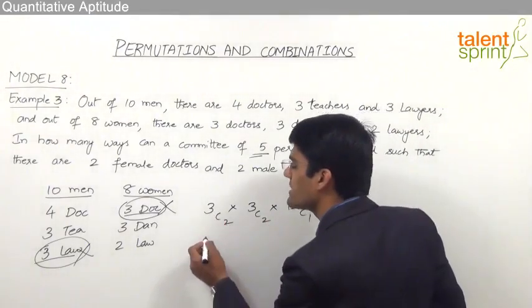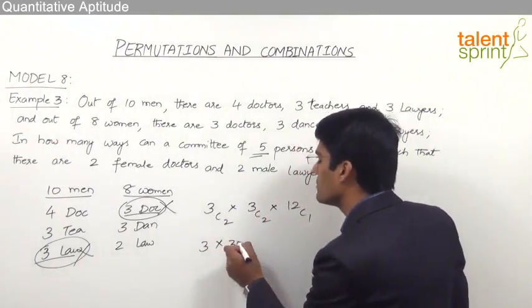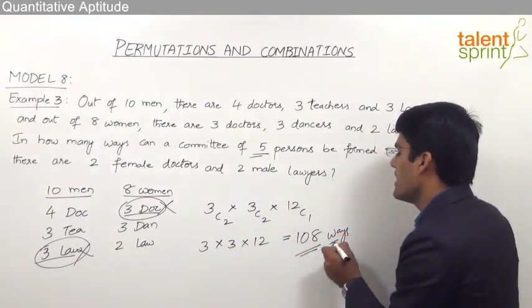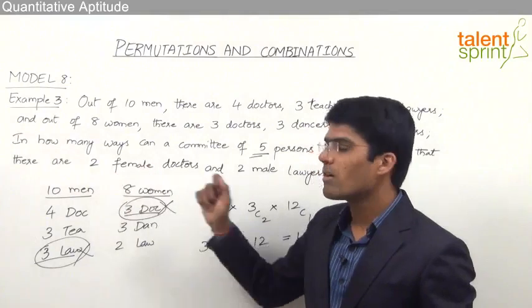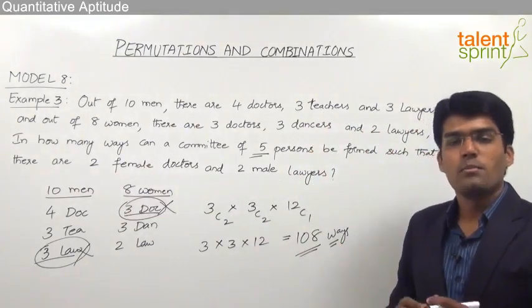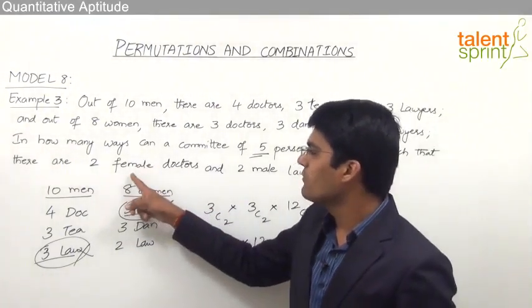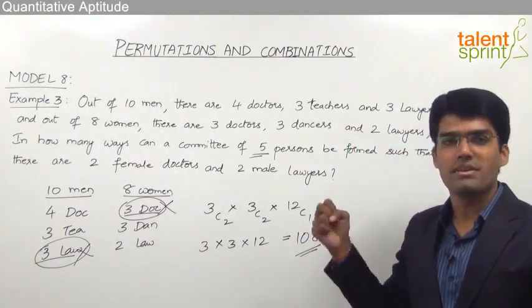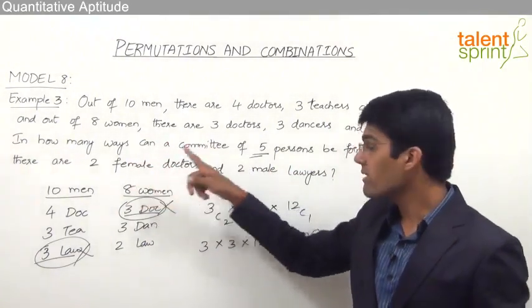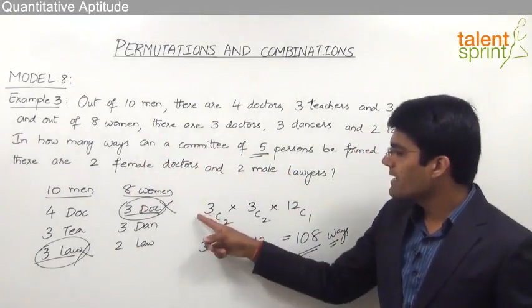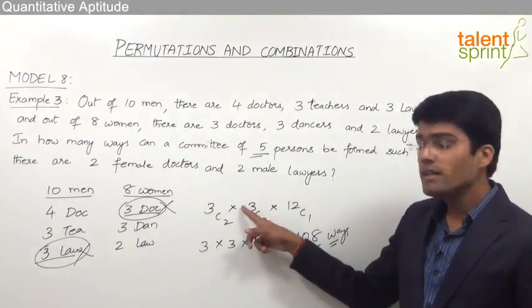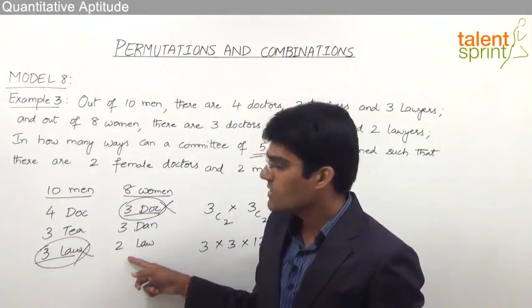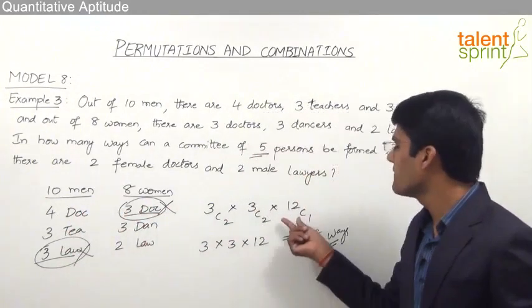Going by the principle of multiplication, the total number of ways is 3C2 into 3C2 into 12C1. Simplifying: 3C2 equals 3, 3C2 equals 3, and 12C1 equals 12. So 3 into 3 is 9, and 9 into 12 is 108. There are 108 ways to form a committee of 5 persons with 2 female doctors and 2 male lawyers. The remaining 1 person can be a male doctor or female lawyer — the condition only specifies the minimum required.